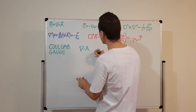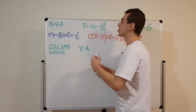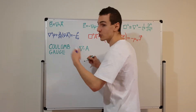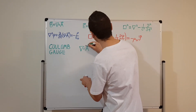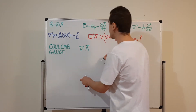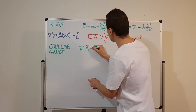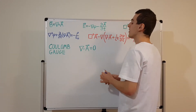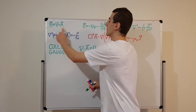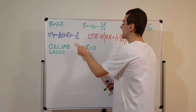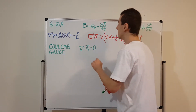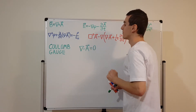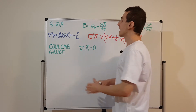In the Lorentz gauge, we also specify the divergence of A, but we set it equal to a time derivative of phi with a factor of 1/c² and a minus sign. In the Coulomb gauge, we do something much simpler: we just set the divergence of A equal to zero. This is also convenient in statics situations, and here it's very convenient because it wipes out that term.